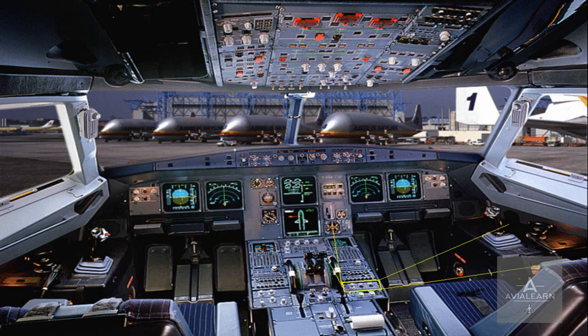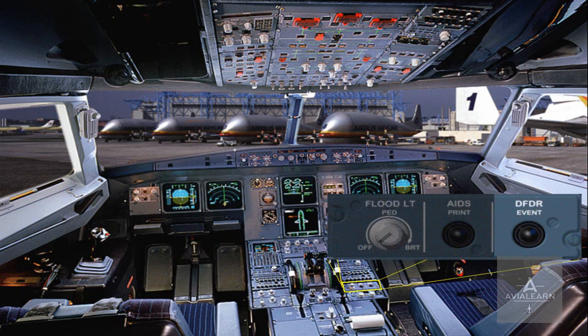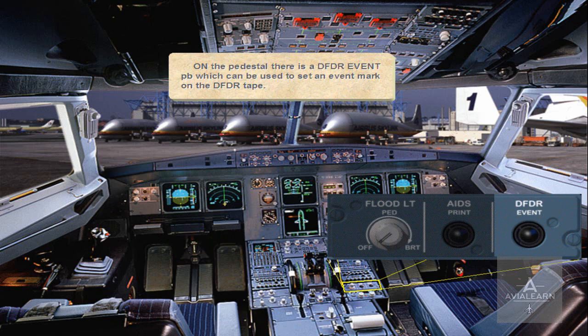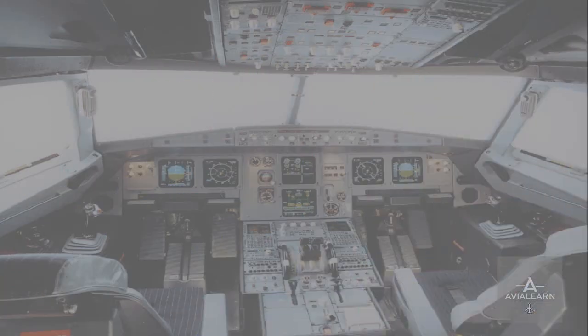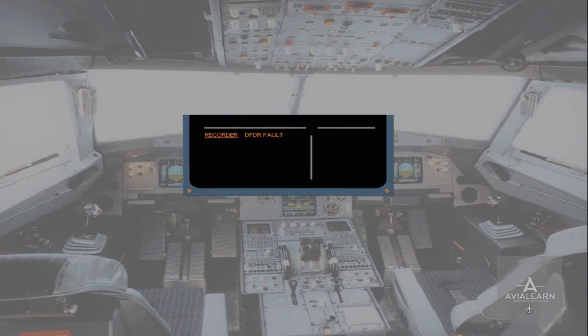On the pedestal, there is a DFDR event push-button which can be used to set an event mark on the DFDR tape. If a fault occurs with the DFDR, an ECAM caution message will be generated. There are no ECAM actions for a DFDR fault.